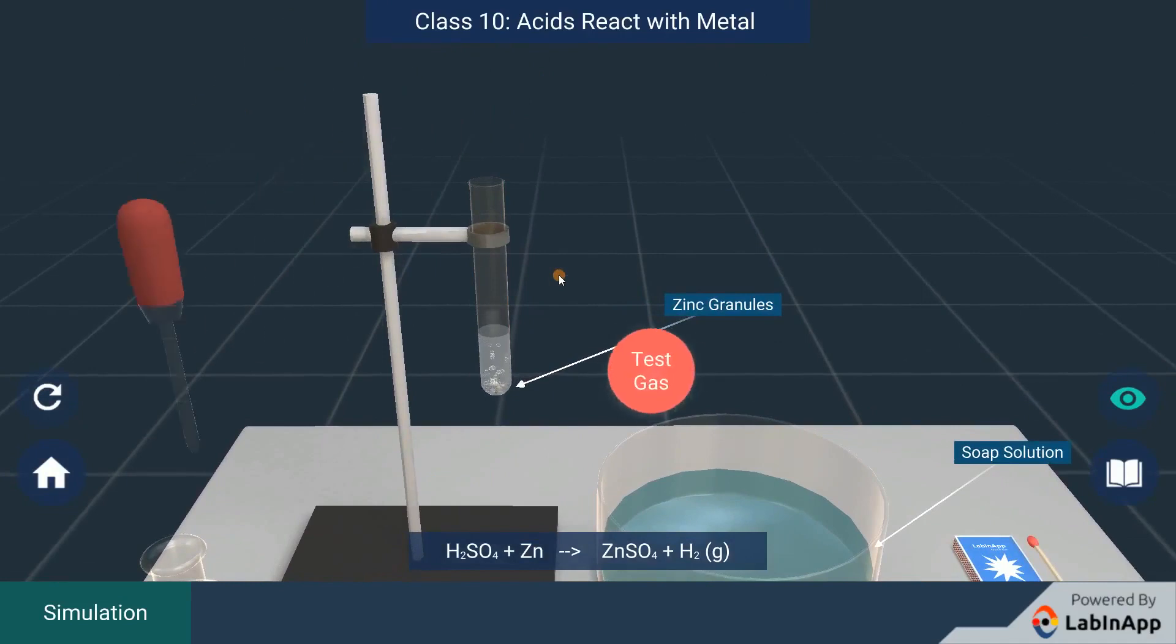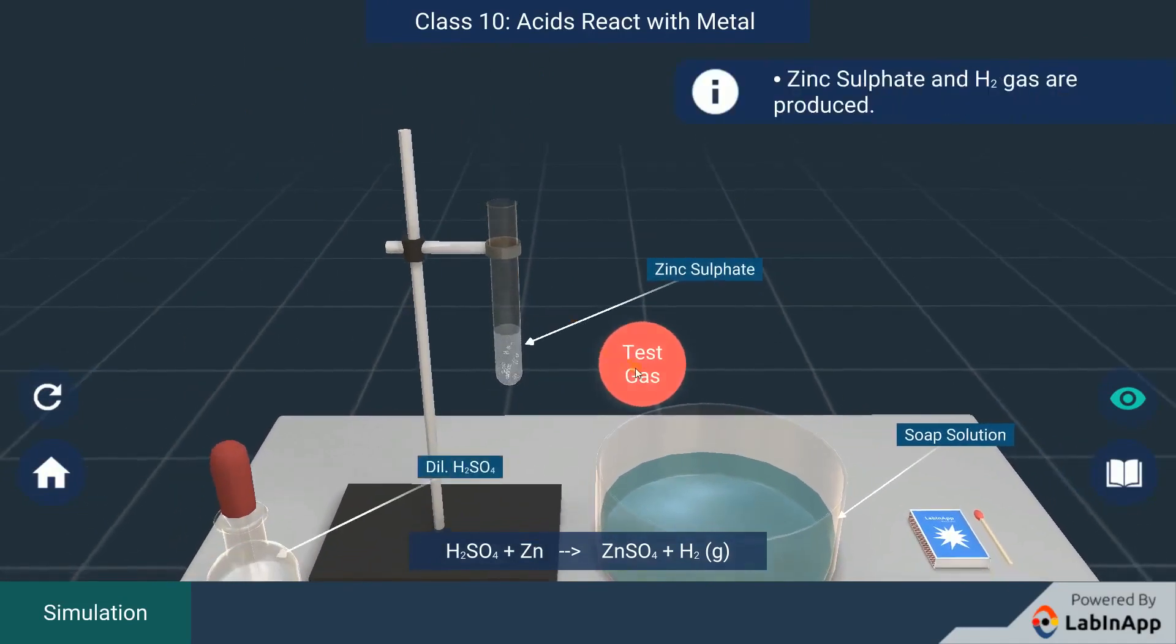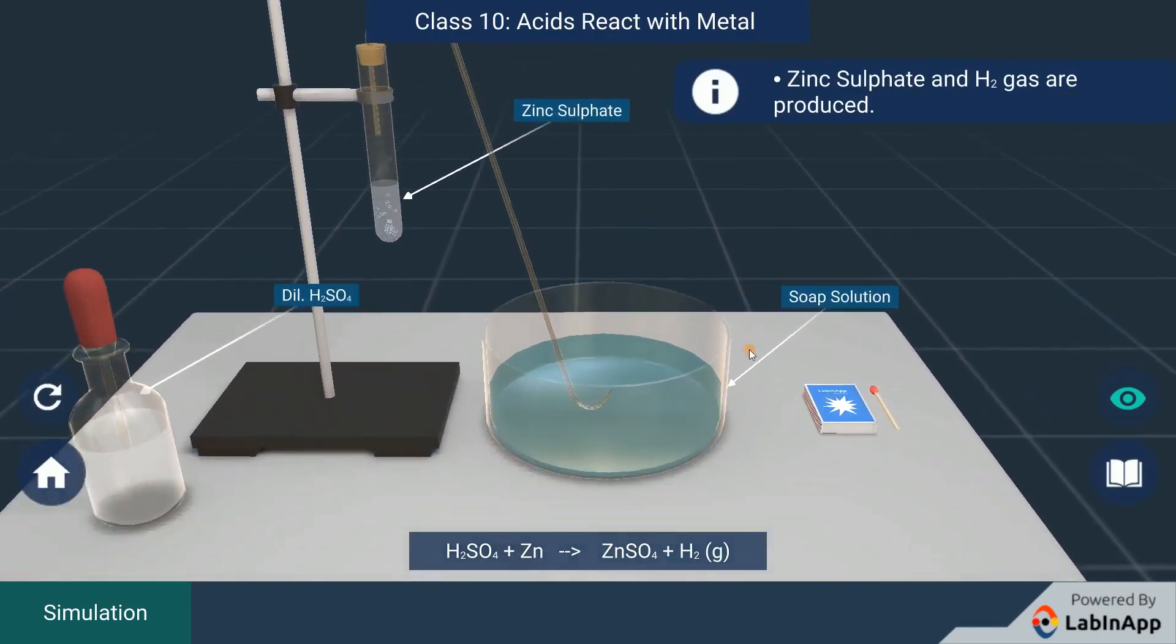The sulfuric acid reacts with zinc and releases hydrogen gas. To test this gas, we pass it through soap solution using a pipe and cork setup.